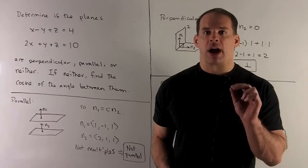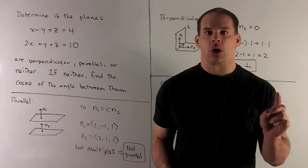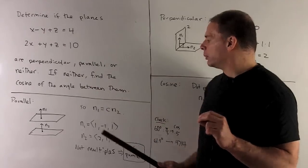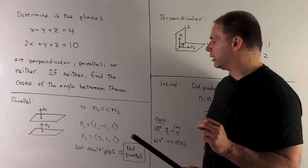Now, how do you get those normal directions? Well, if you look at x, y, and z, you just peel off those coefficients, put them in a vector. So for our first one, we get 1 minus 1, 1. Our second one, we get 2, 1, 1.